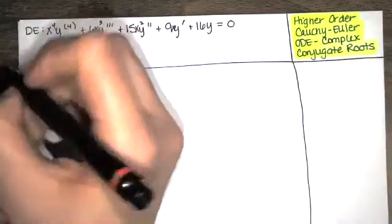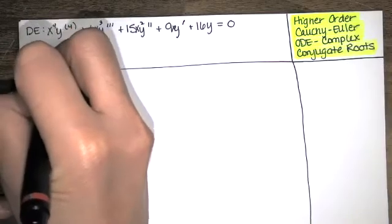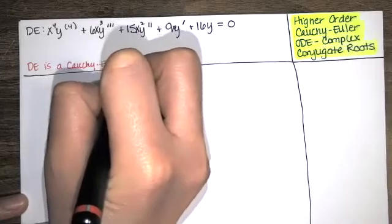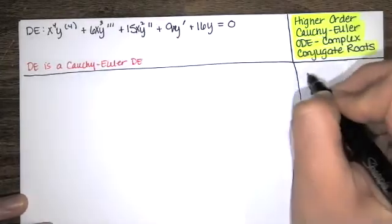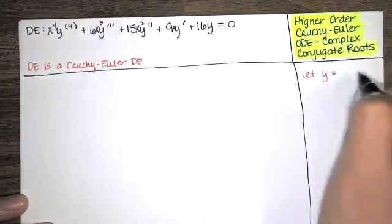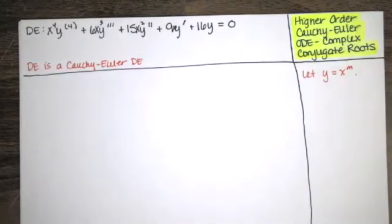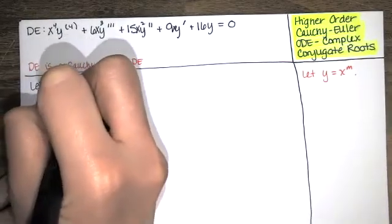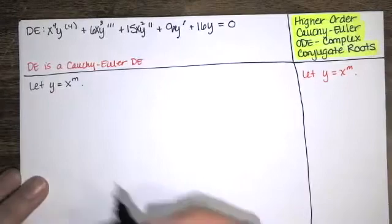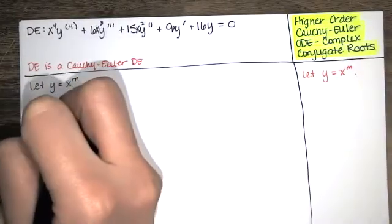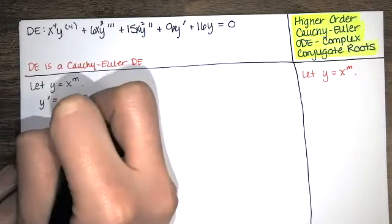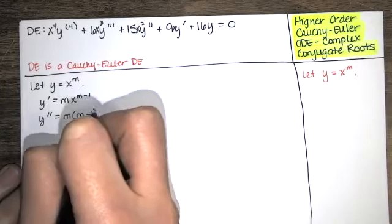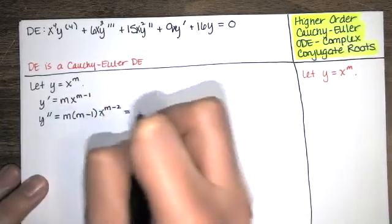Since it's Cauchy-Euler, we let y equal x to the m, where m is some unknown constant. We're going to find out what that constant has to be to make this function satisfy that equation. So we'll take the first derivative — bring the power down, multiply by x to the one less power — then take the second derivative: bring the next power down, multiply by x to the one less power, and distribute.